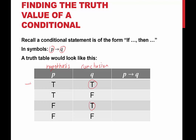So if we look at the first line, we have a true implying a true — yes, that is a true conditional statement. The second row we have a true implying a false — that is a false conditional. A false hypothesis doesn't matter what comes next. A false hypothesis will always lead to a true conditional statement, so it doesn't matter if q is true or false. If the hypothesis is false, the conditional statement is true. So it would look like true, false, true, true.